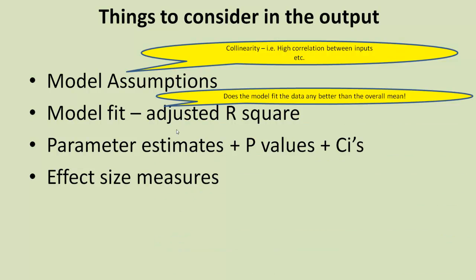Model fit. Well, first of all, we want to know: does the model fit the data any better than the overall mean? If it doesn't fit any better than the null model, the overall mean, we can basically forget it. Remember, we do that basically by looking at the adjusted R square and the p-value associated with that.